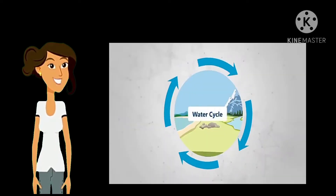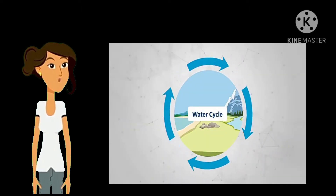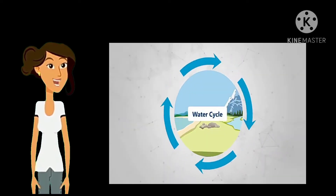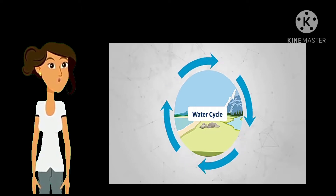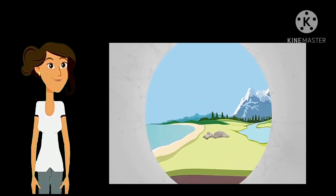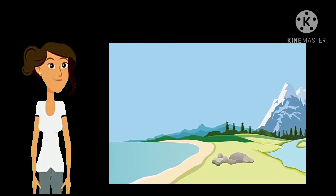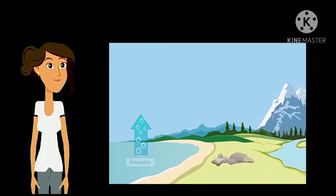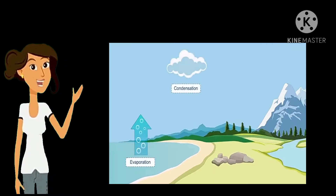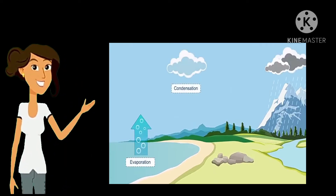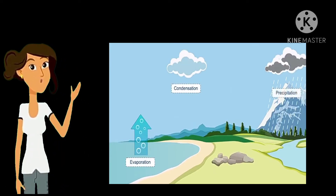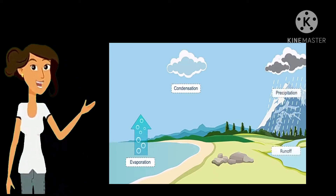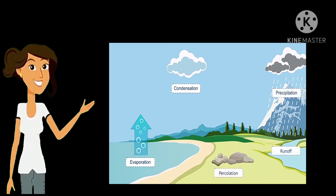The water cycle is a hydro cycle which consists of some processes: evaporation, condensation, precipitation, and runoff. Let us see these processes carefully.